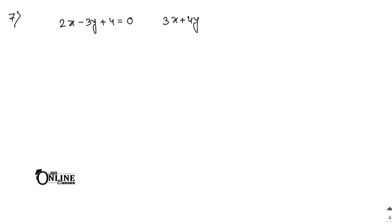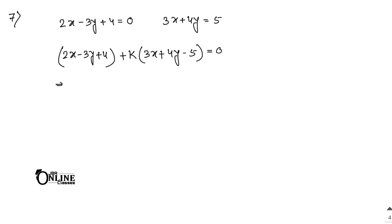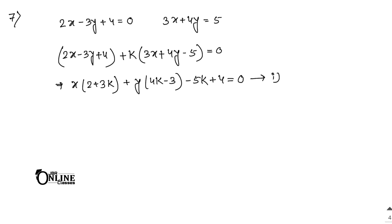Next, sum number 7. Obtain the equation of a line passing through the intersection of 2x minus 3y plus 4 equal to 0 and 3x plus 4y equal to 5, and drawn parallel to the y-axis. So the point of intersection equation is: 2x minus 3y plus 4 plus k into 3x plus 4y minus 5 equal to 0. If x is common: 2 plus 3k; if y is common: 4k minus 3; and the constant: minus 5k plus 4, equal to 0. Put it as equation number 1.